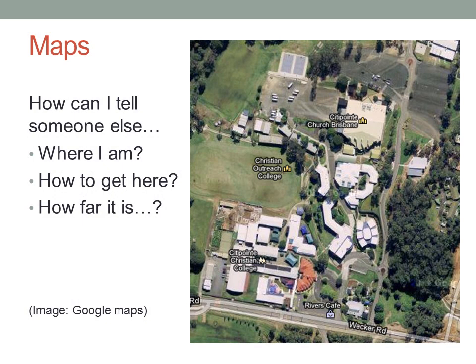How do I use a map to tell someone where I am, or how to get where I am, or how far it is to get here? I need something more than just a picture of the ground. I need a way of describing the location in an unambiguous way.